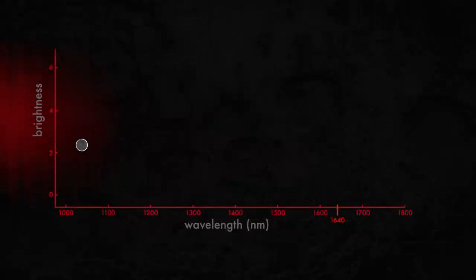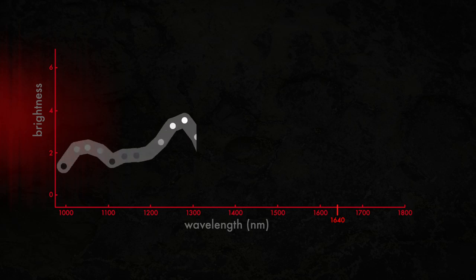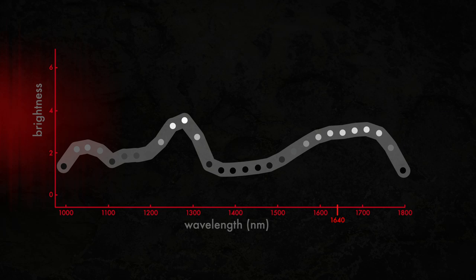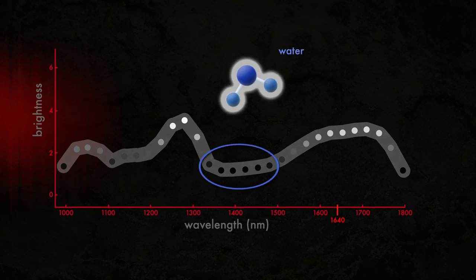But you can also measure how bright it is at each wavelength, and that's the spectrum of the planet that allows you to determine the chemical composition of it. So if you see a dip somewhere at a particular wavelength, you can identify what molecule caused that, because molecules absorb at very specific, well-known, and well-catalogued wavelengths of light.